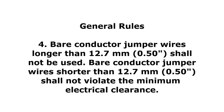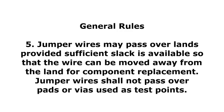4. Bare conductor jumper wires longer than 12.7 mm shall not be used. Bare conductor jumper wires shorter than 12.7 mm shall not violate the minimum electrical clearance. 5. Jumper wires may pass over lands provided sufficient slack is available so that the wire can be moved away from the land for component replacement. Jumper wires shall not pass over pads or vias used as test points.